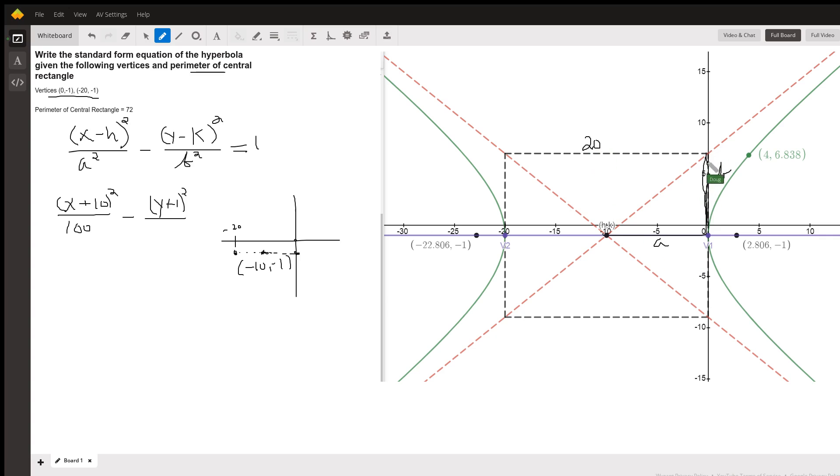And that means this distance has to be 16 from the top of the rectangle to the bottom of the rectangle, because half the perimeter is 36.